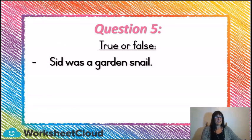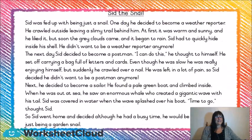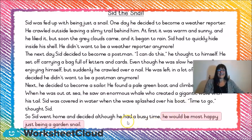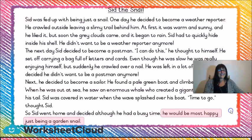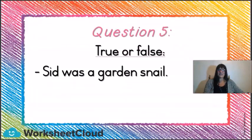Now true or false? Remember, true is yes and false is no. Sid was a garden snail. Let's check in our text. The last line said he would be most happy just being a garden snail. So was Sid a garden snail? It is true — Sid was a garden snail. Answer number 5 is true.